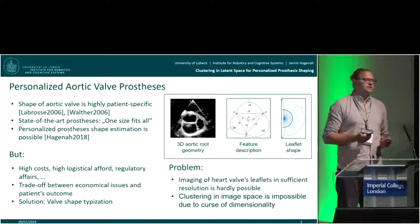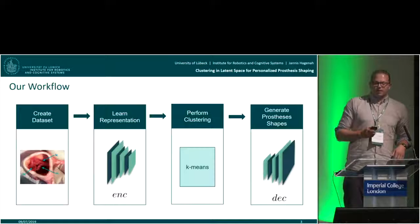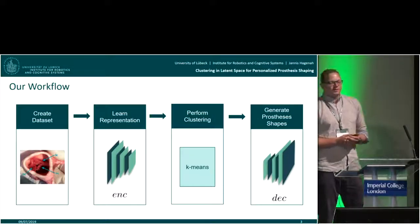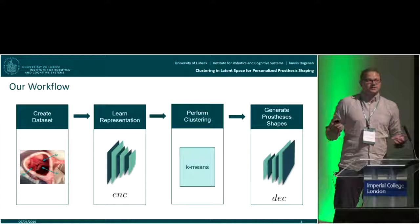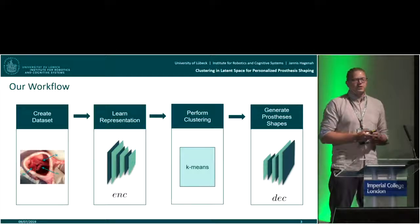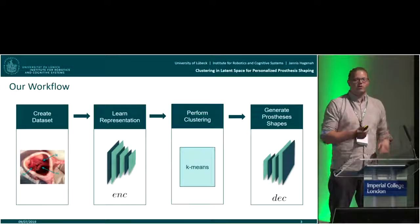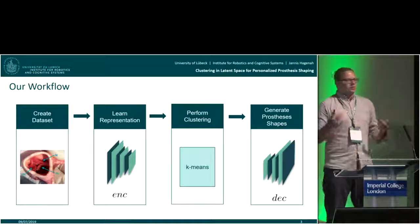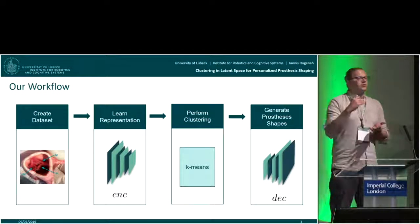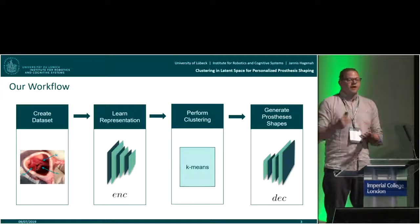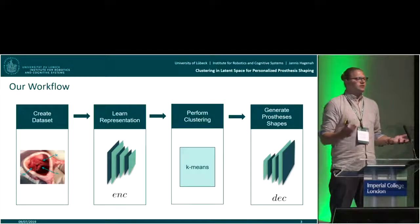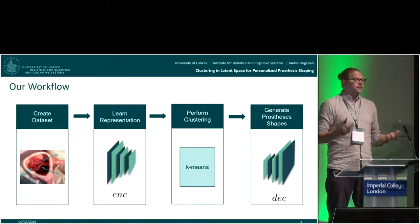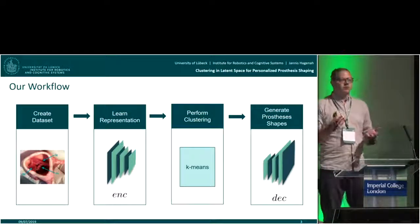We want to do clustering, but we can't do this directly in the image space, which is why we came up with the pipeline we present here. First we needed a dataset. Since imaging is not really possible, we did some workaround where we cut out leaflets from porcine aortic valves. Then we trained an autoencoder to find a good representation of our aortic valve.